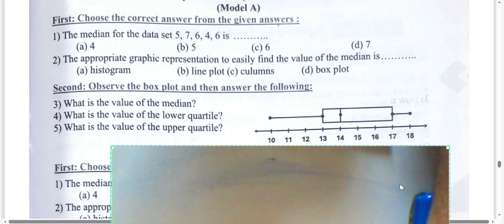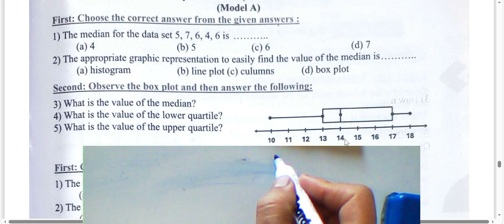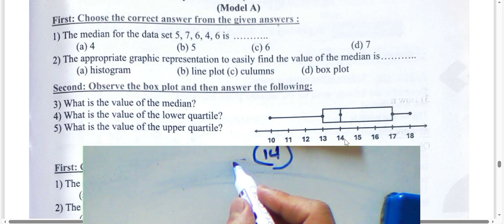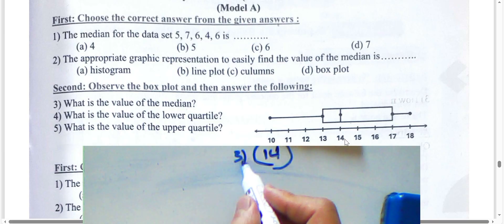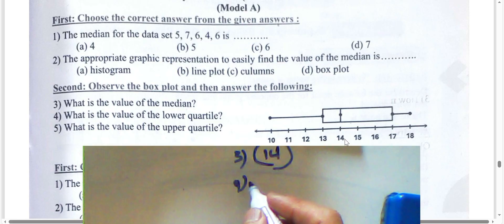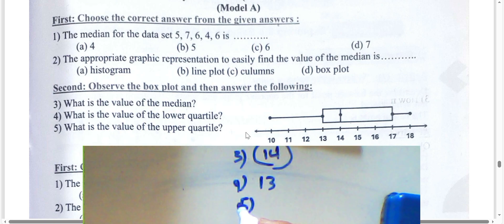Observe the box plot and answer the questions. Question two: what is the median? The median is 14 — it lies in the middle. Question three is next. Question four: what is the value of the lower quartile? The lower quartile is 13.